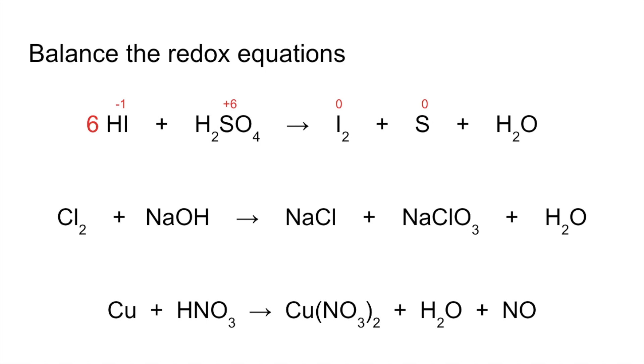Now we can go ahead balancing it. 6 HIs implies we need 3 I2s. The oxidation number changes are done, now we just need to balance the waters with a 4.